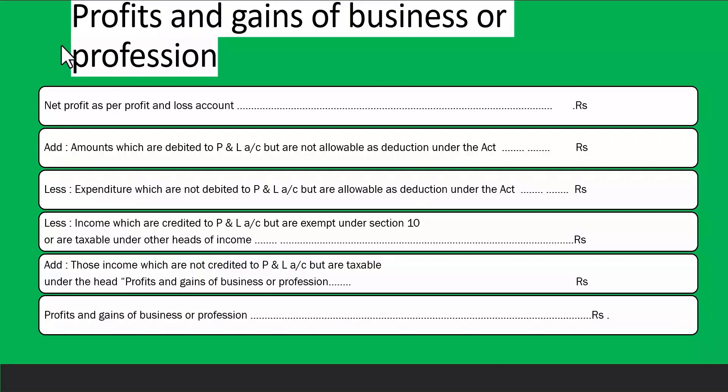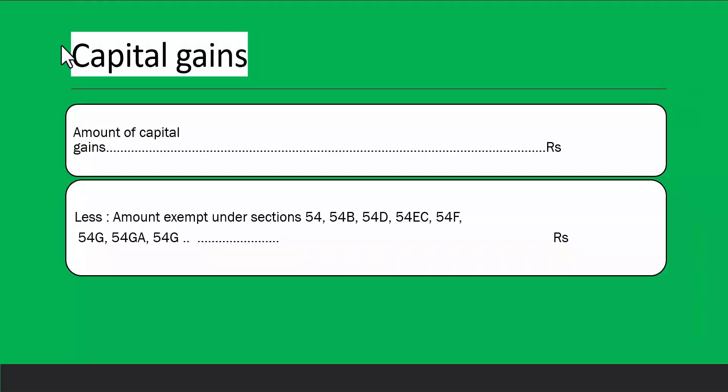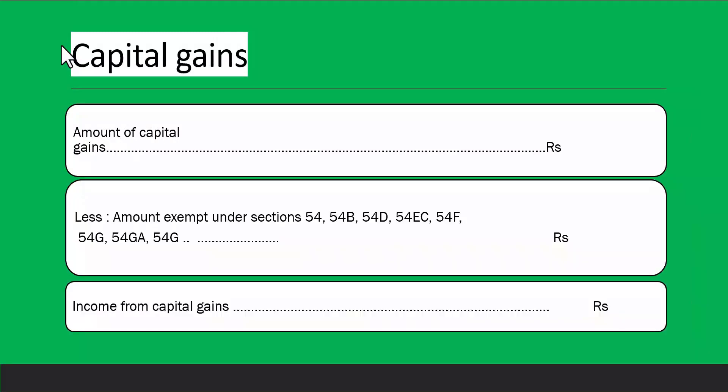After all these adjustments you arrive at profits and gains of business or profession. For capital gains, you take the gross capital gain amount and reduce amounts exempt under Section 54, 54B, 54D, 54EC, 54F, 54G, and 54GA to arrive at taxable capital gains income.